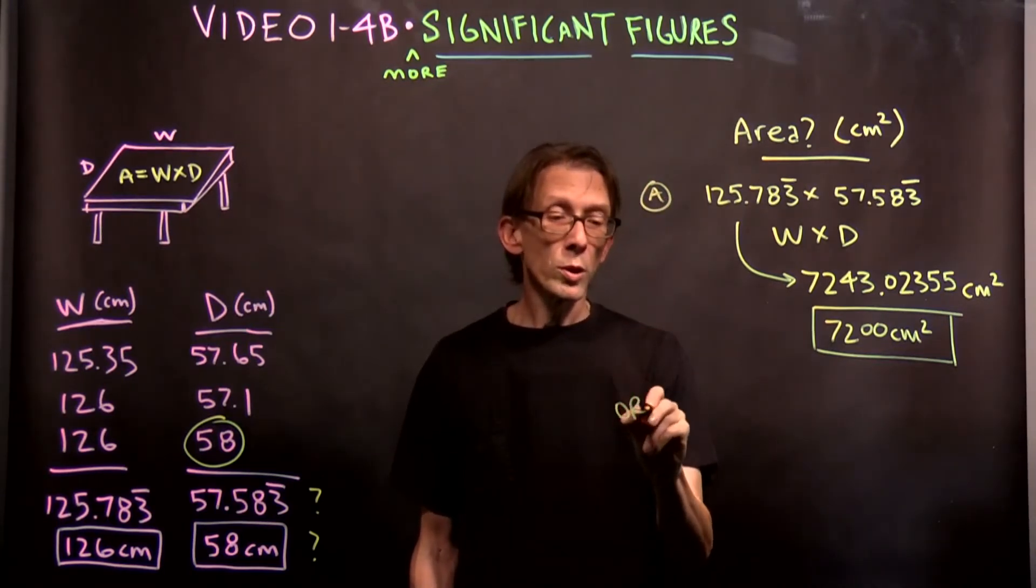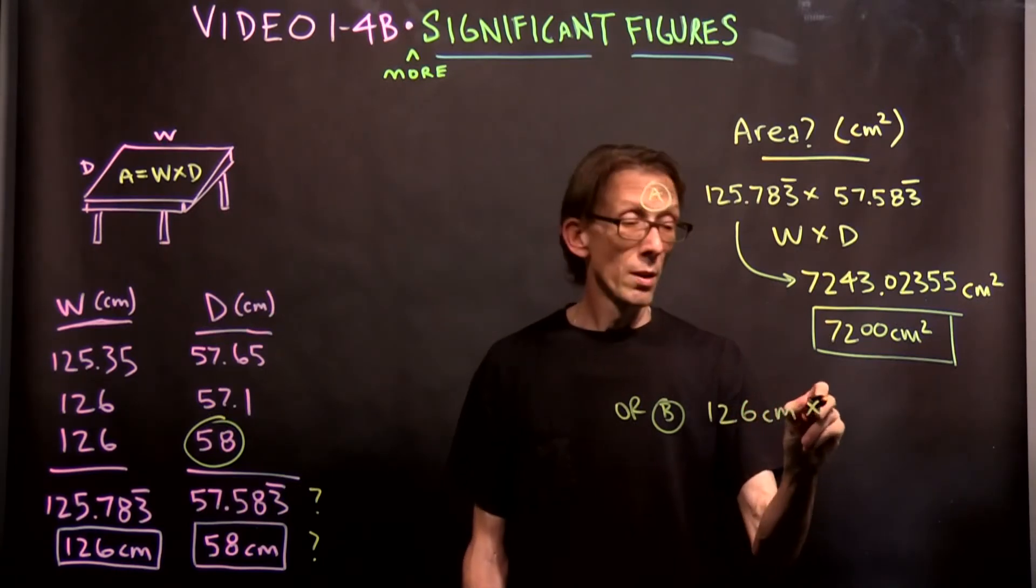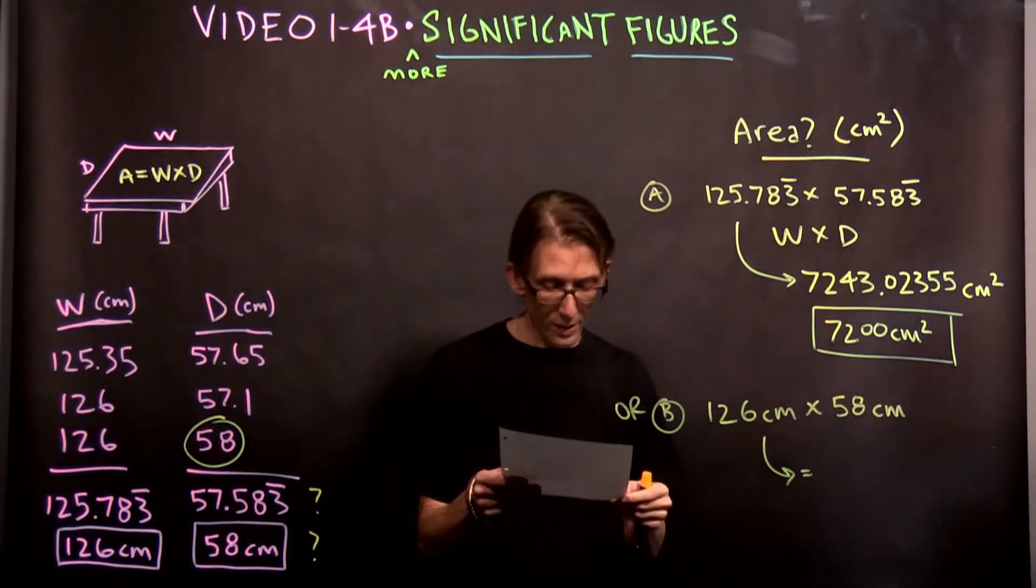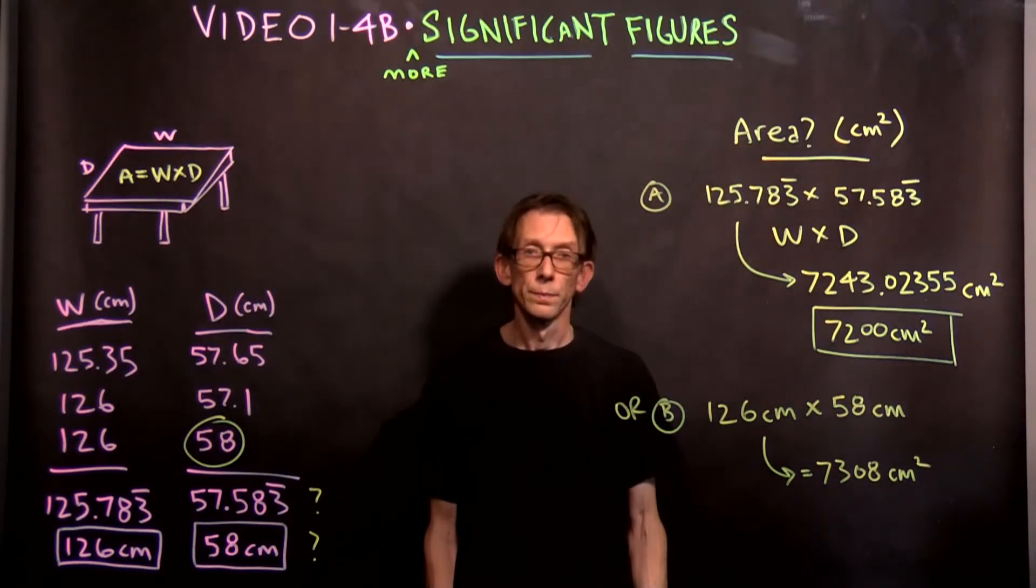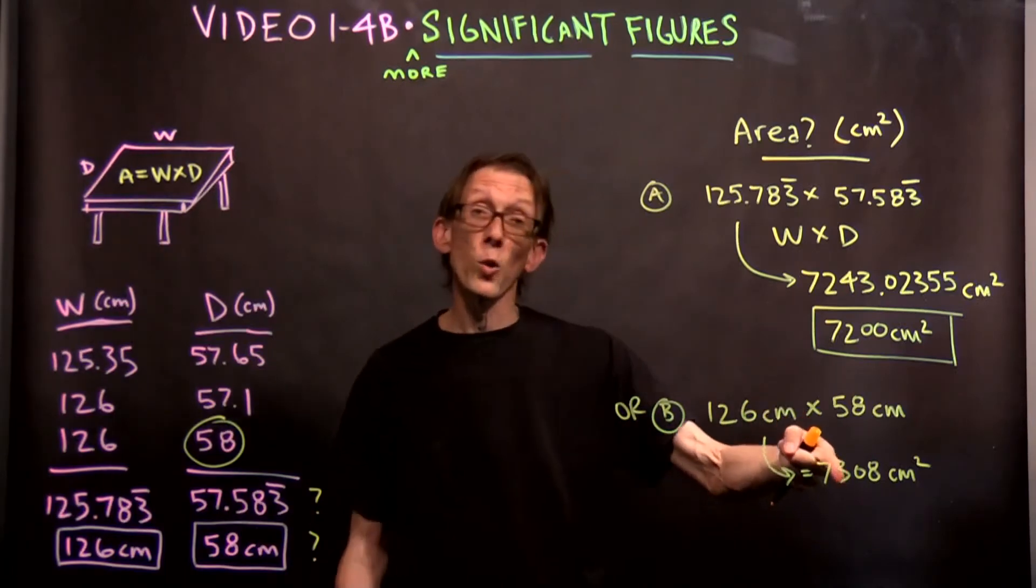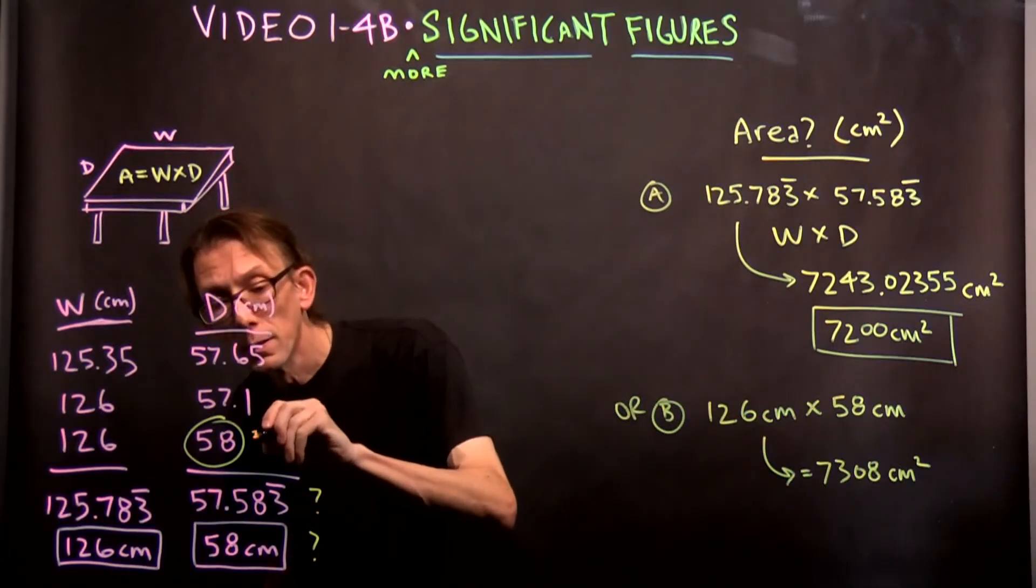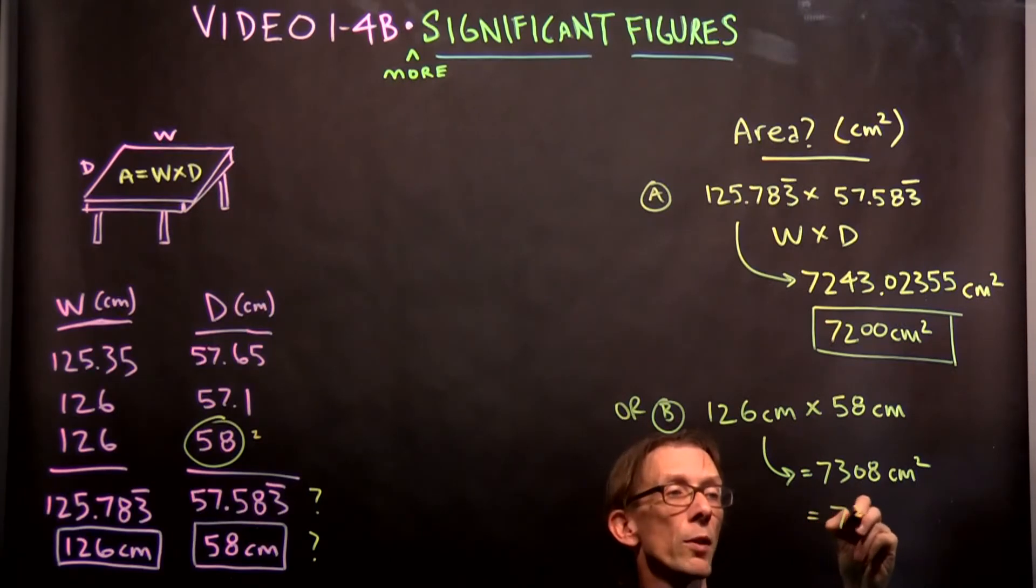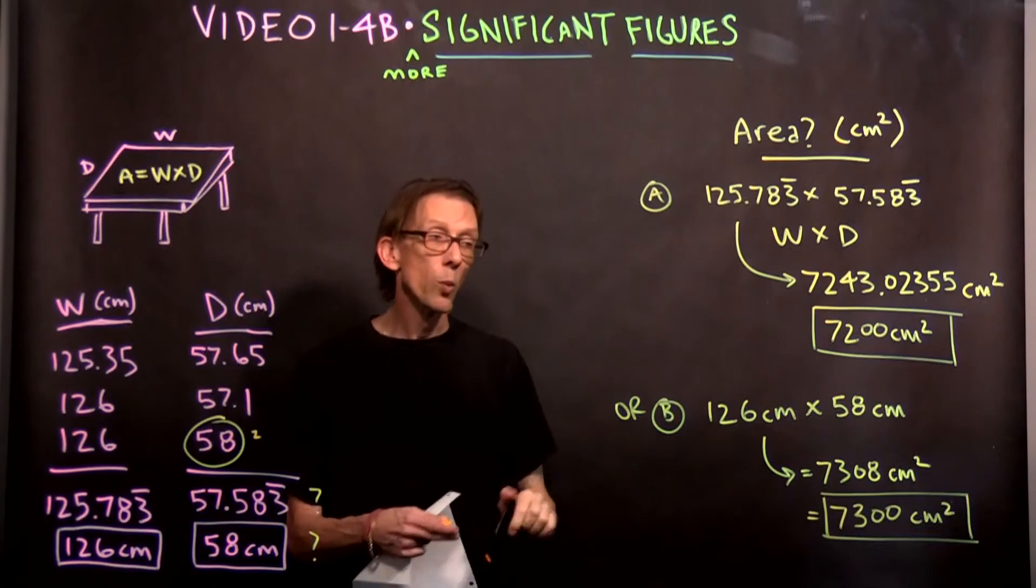or do we use option B, which would be 126 centimeters times 58 centimeters. And then we multiply those two together, we get 7,308 centimeters squared. So we get a different number this way. And the question is again, how many significant figures do we have to round this to, right? Because this has four significant figures in it, but we can't keep four because there's only two as the minimum number given to us in the input. So this has to be rounded to 7,300 centimeters squared.